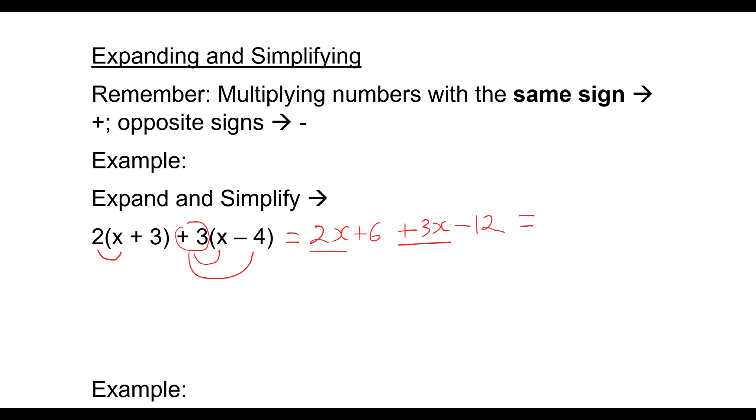Once I've expanded, I now collect my like terms to simplify. 2X plus 3X. Remember, it's the sign in front of a term that determines its sign. So 2X plus 3X is 5X. Plus 6, take away 12, is minus 6. So I have 5X minus 6.